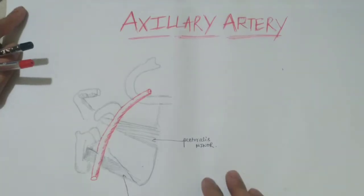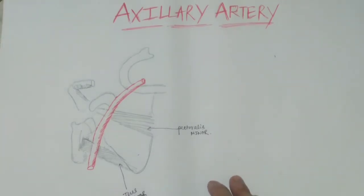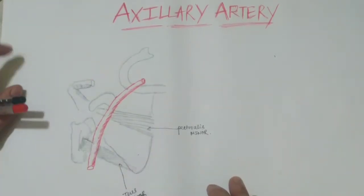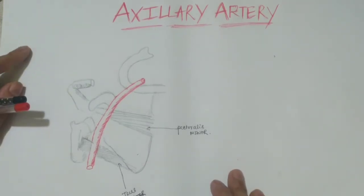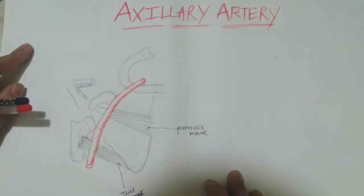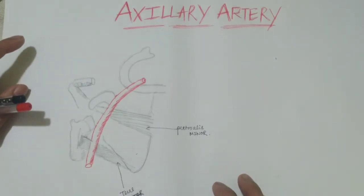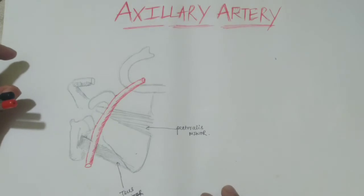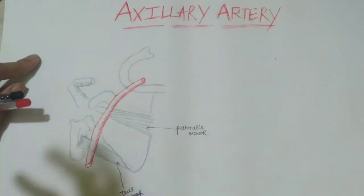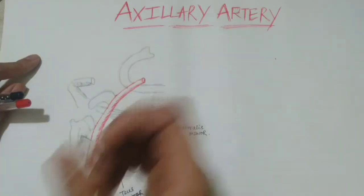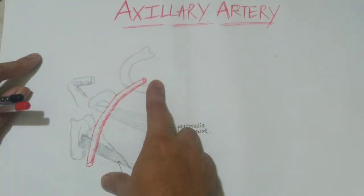We are now in the section on blood supply of the axillary artery. The axillary artery is the continuation of the subclavian artery. The axillary artery supplies the upper limb region, the lateral thorax, the dorsal scapular region, and the shoulder joint area. This artery is the continuation of the subclavian artery, which was discussed in the previous video.